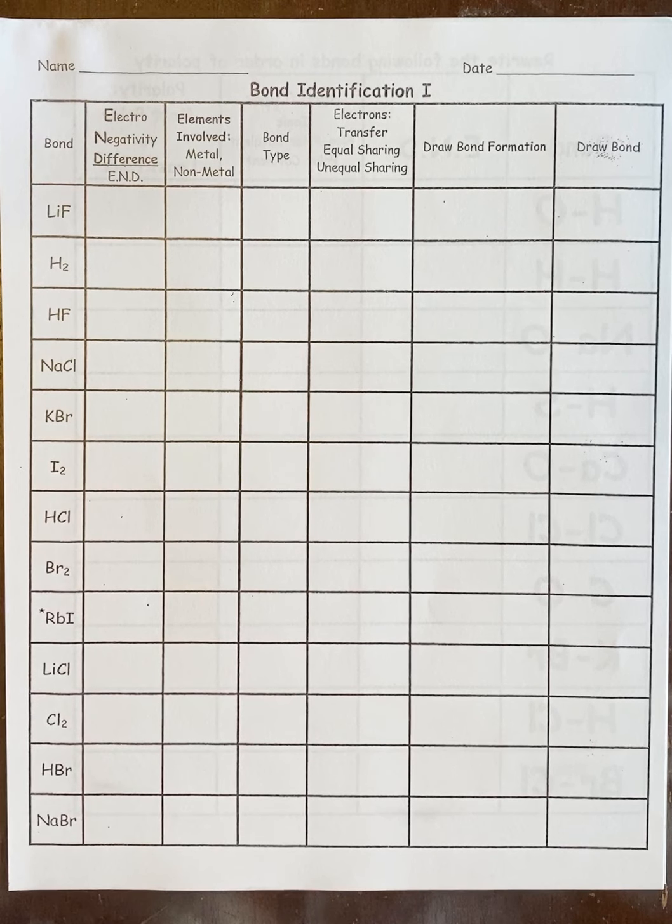Today we're going to be drawing the three types of bonds that we really spend a lot of time with: ionic, non-polar covalent, and polar covalent. Metals we don't do too much with—they're a little bit more complicated, so we just take a very broad, generalized approach to metals.